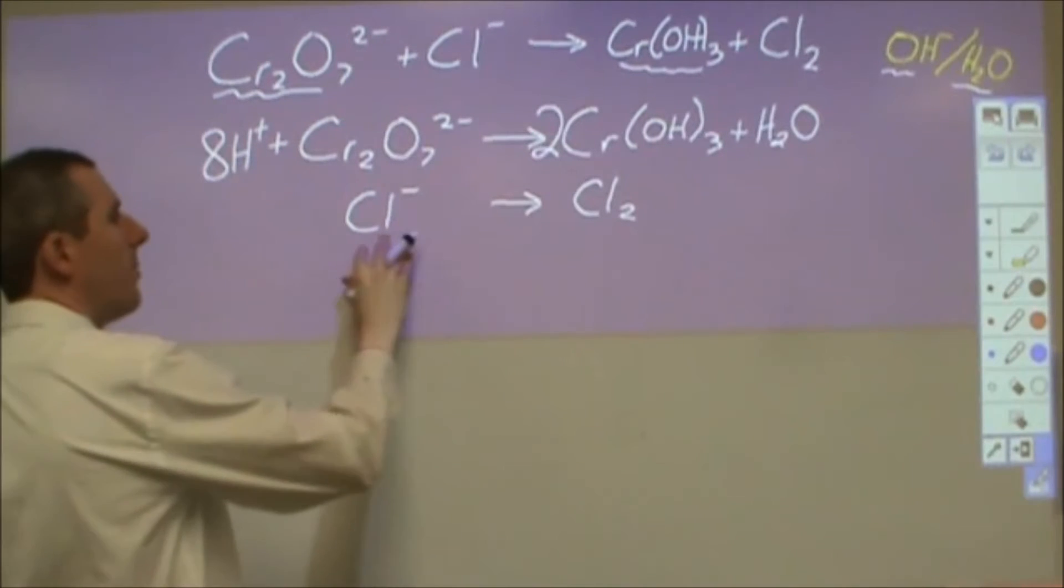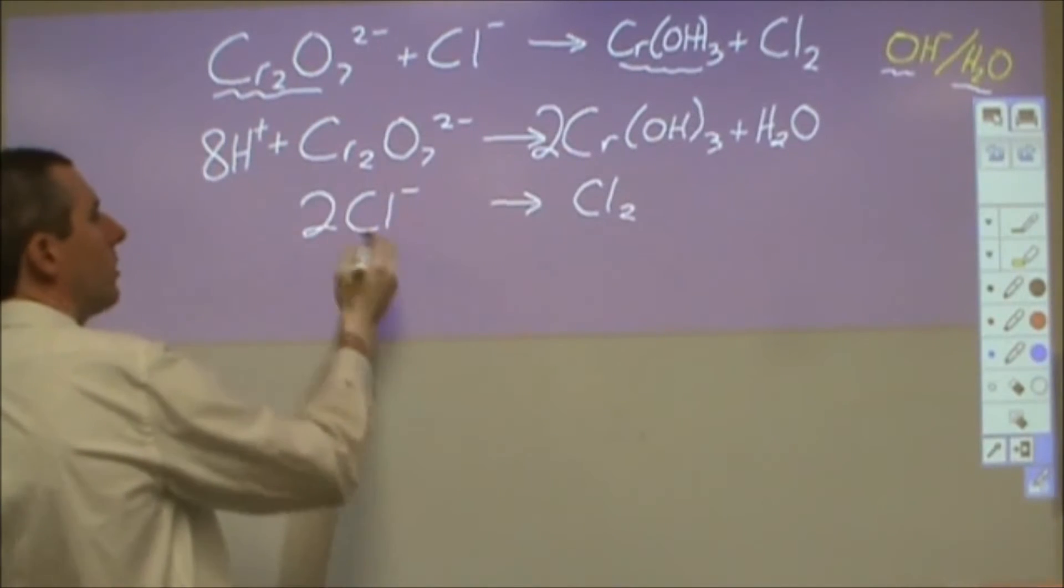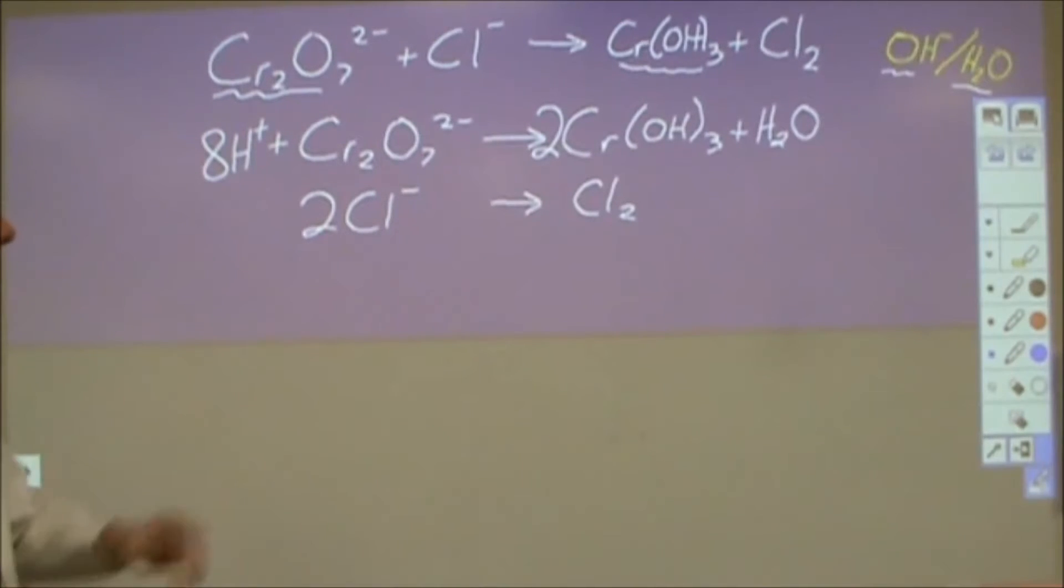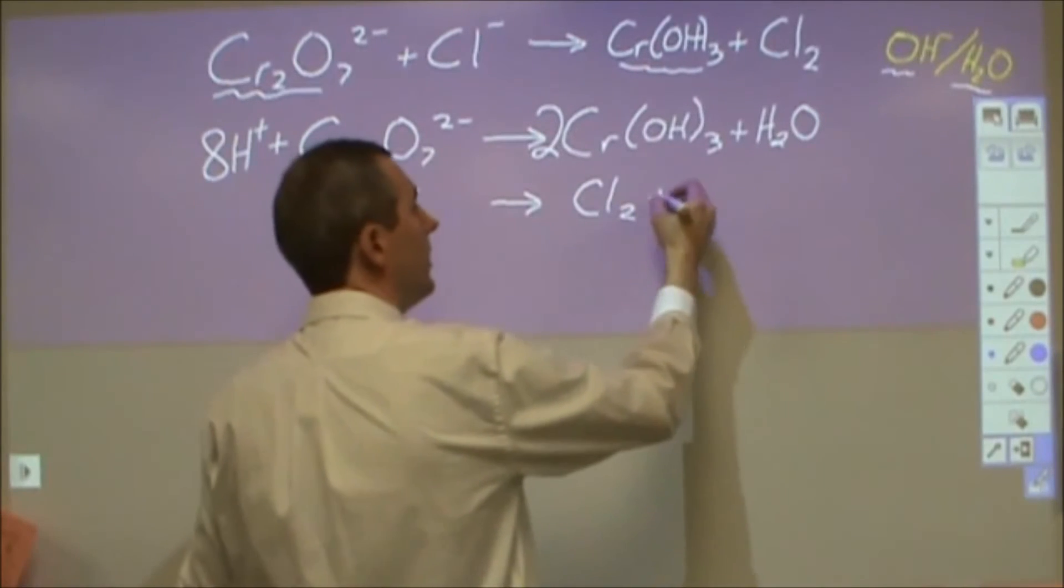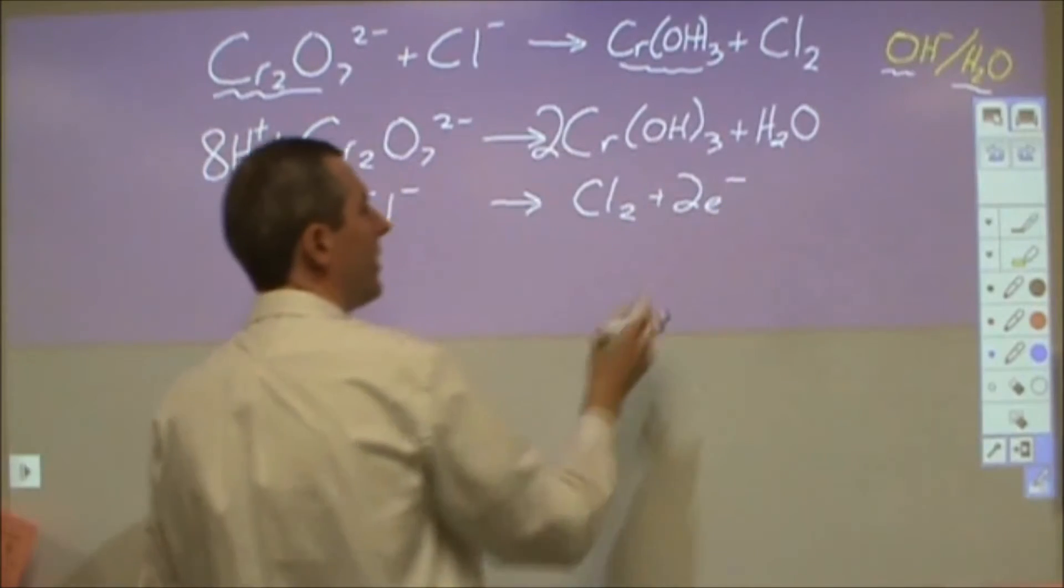We'll look at the charge in a second. On the bottom equation I have two chlorides that become chlorine gas. That's really all I need for my balancing. I don't have any oxygens or hydrogens. And then with that I'm going to need two electrons over here to balance the charge.